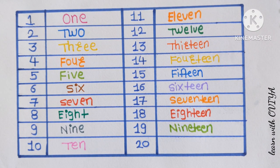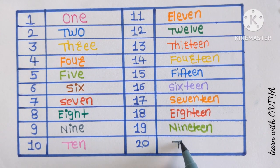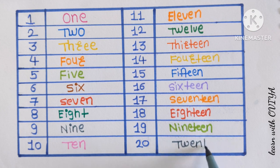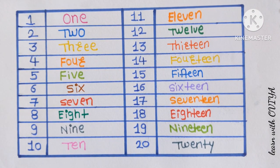And after 19 is number 20. 20. T-W-E-N-T-Y. 20 with a gray color.